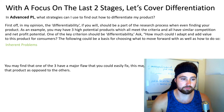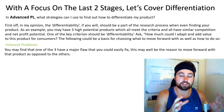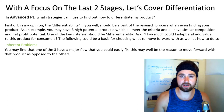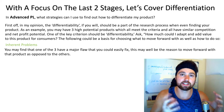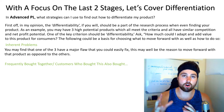Always ask yourself: how much could I adapt, add value, or fix problems with this product? Number one is inherent problems. You might find that one of your three high potential products has a flaw that consumers just keep complaining about — and it's a flaw that you can fix. It's a problem you can adapt to make your version of the product far better than those currently available.